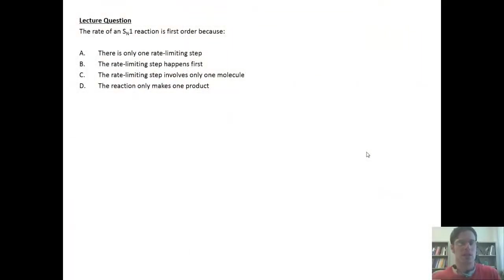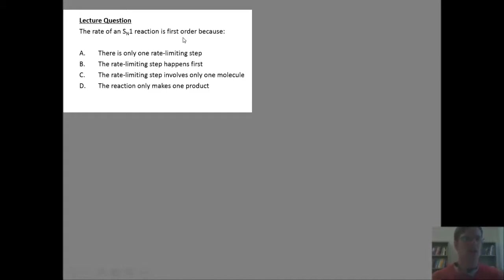We're now brought to a series of conceptual substitution and elimination questions. In this first one, it says the rate of an SN1 reaction is first order because of what? The correct answer to this problem is C. Now, if you want to know why, I'll post a link here to an earlier video in which I explain this question in detail.